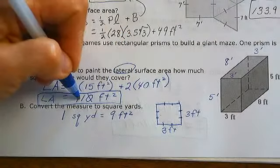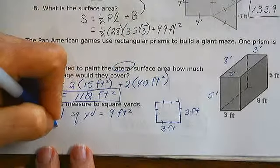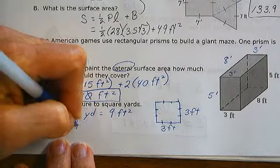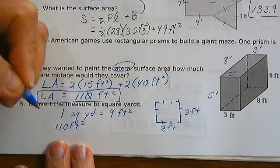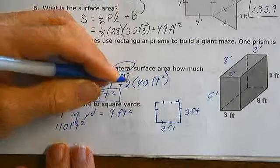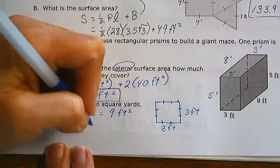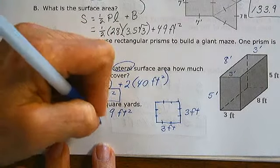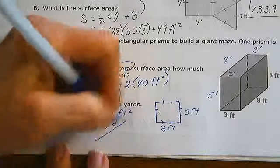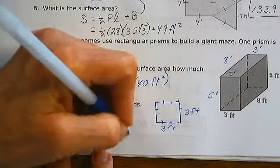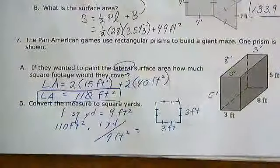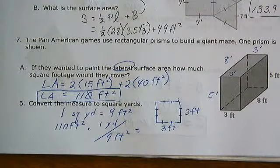If I have 110 square feet, and 1 square yard is 9 feet square, that means what I have is 110 divided by 9.